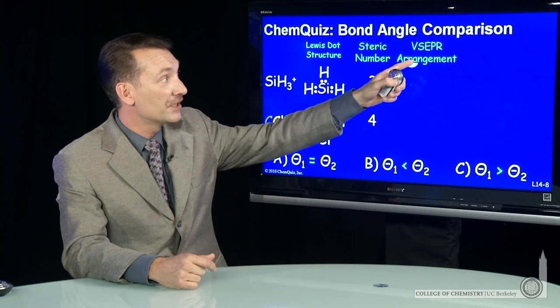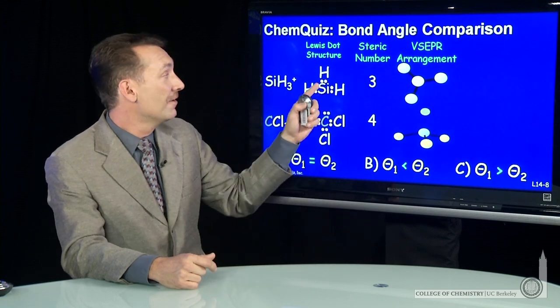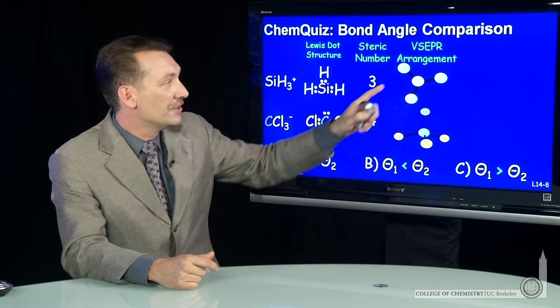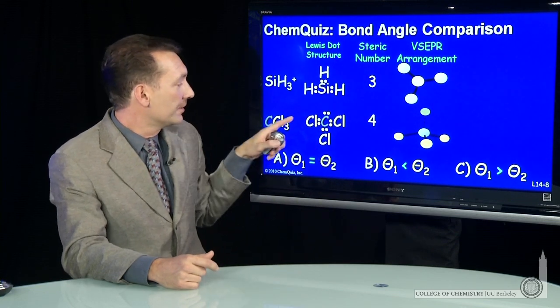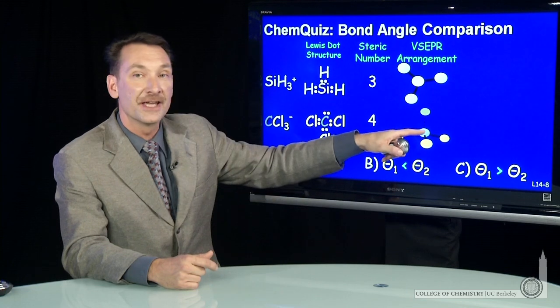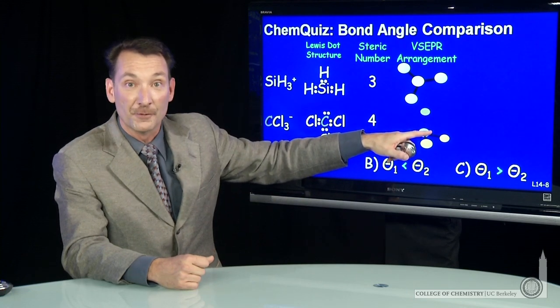The steric numbers will give us a VSEPR arrangement. For SiH3+, a trigonal arrangement, three things. For CCl3-, four things, a tetrahedral arrangement.